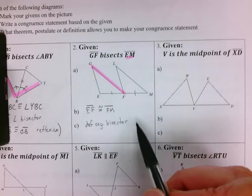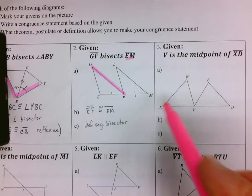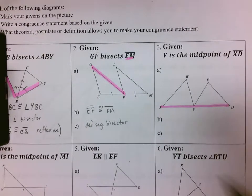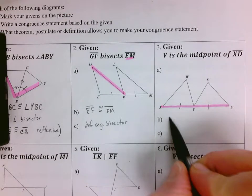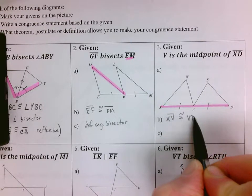Given V is the midpoint of segment XD. I'm going to use the highlighter to help emphasize. There's V, the midpoint cuts this in half, so segment XV is congruent to segment VD, definition of midpoint.